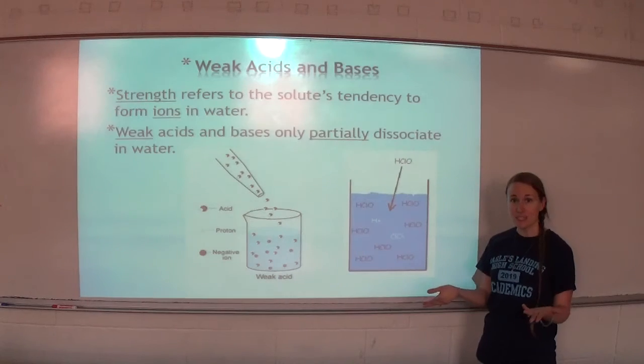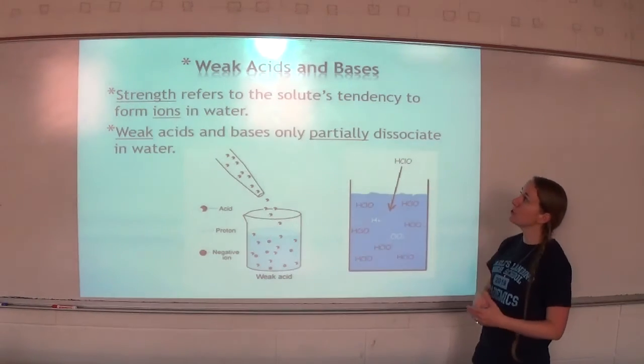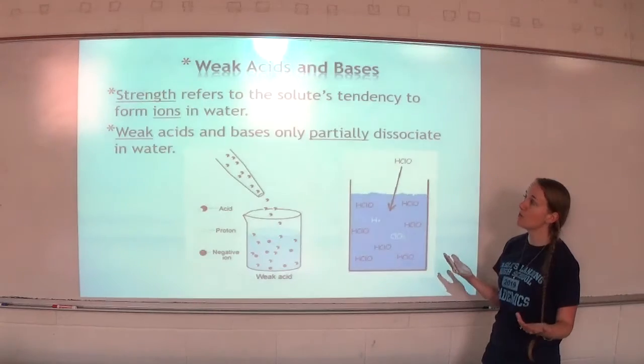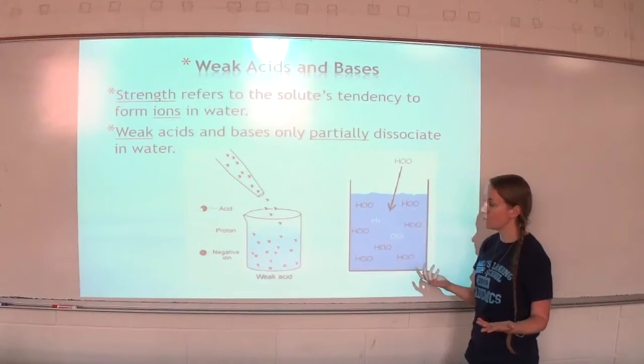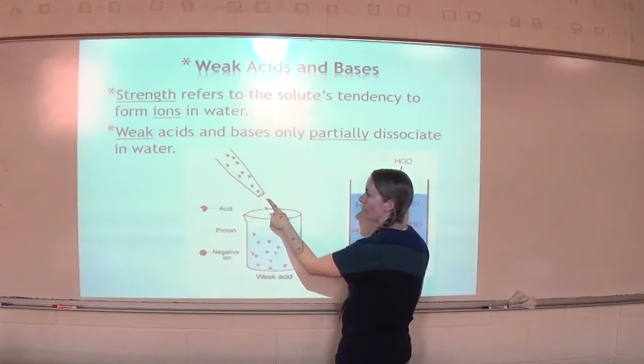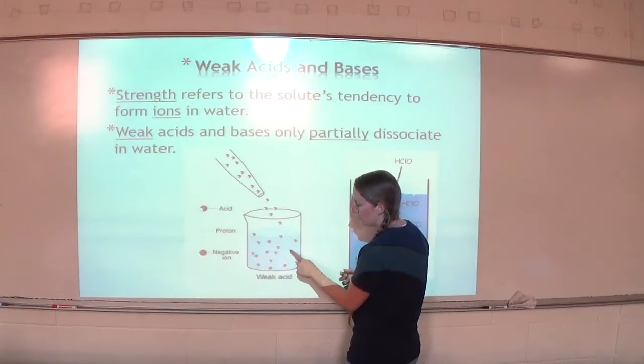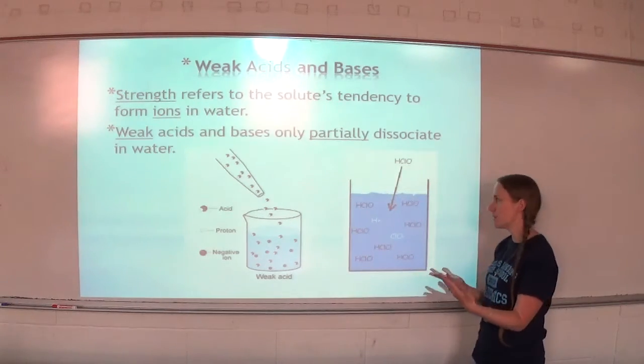Weak acids and bases, on the other hand, only partially break apart. Strength refers to the solute's tendency to form ions in water. Weak acids and bases only partially dissociate in water. Here's an example. We have one white, one red. If you look, yes, some of them have broken apart, but many of them are staying together. They're not all going to break apart.